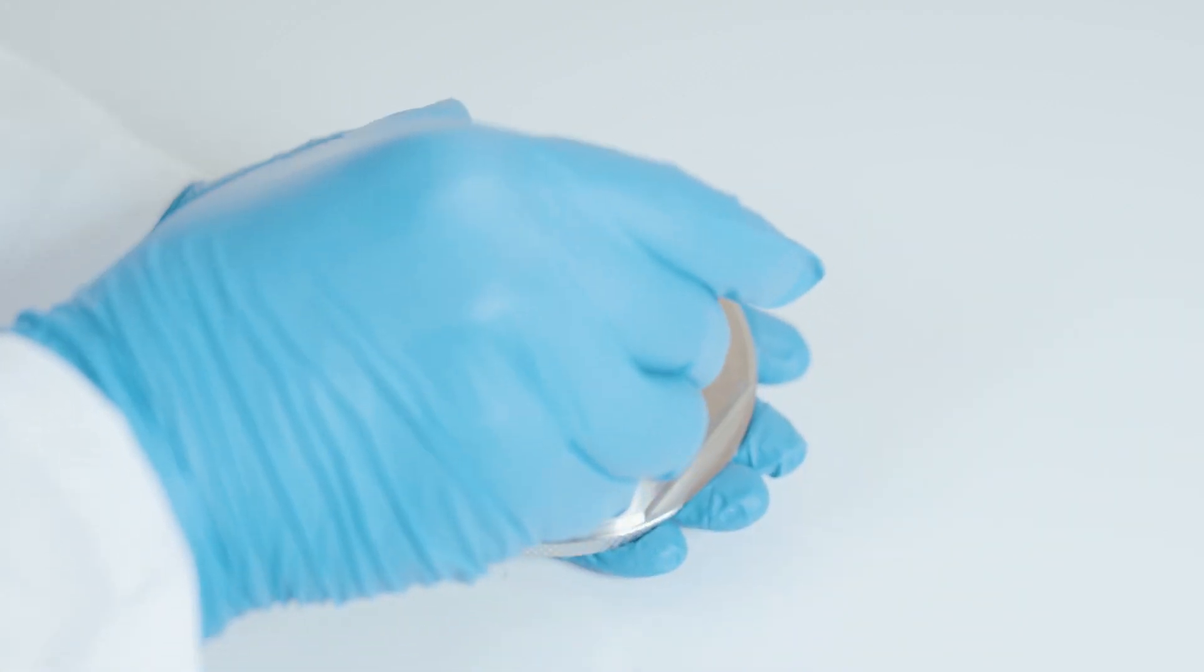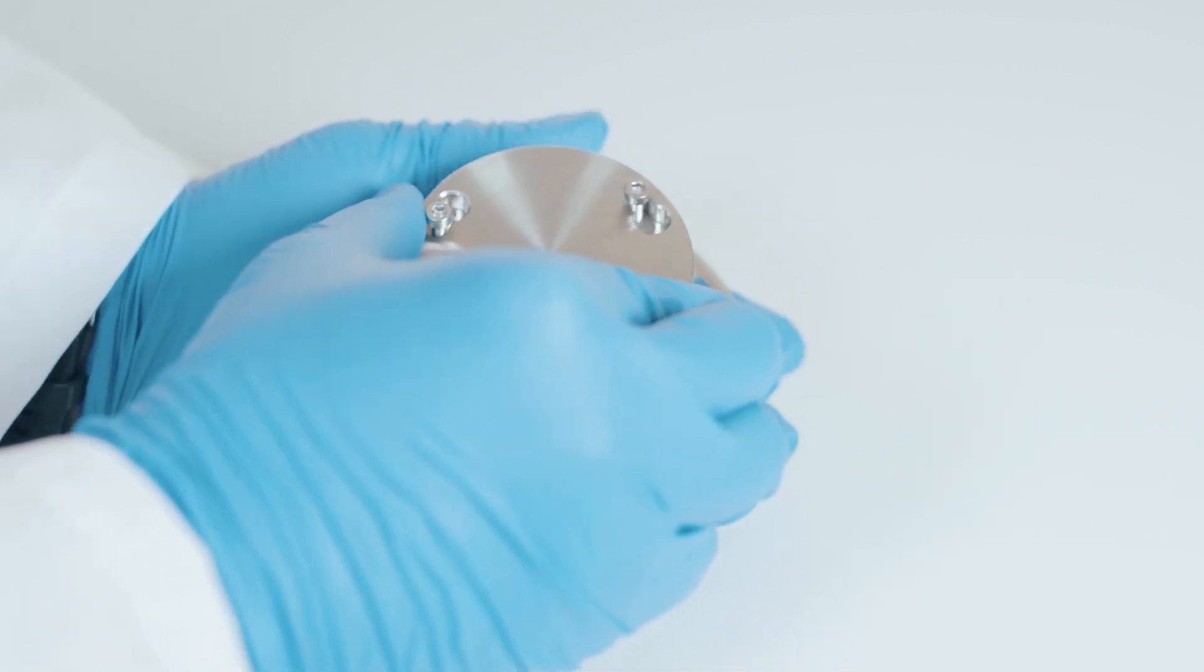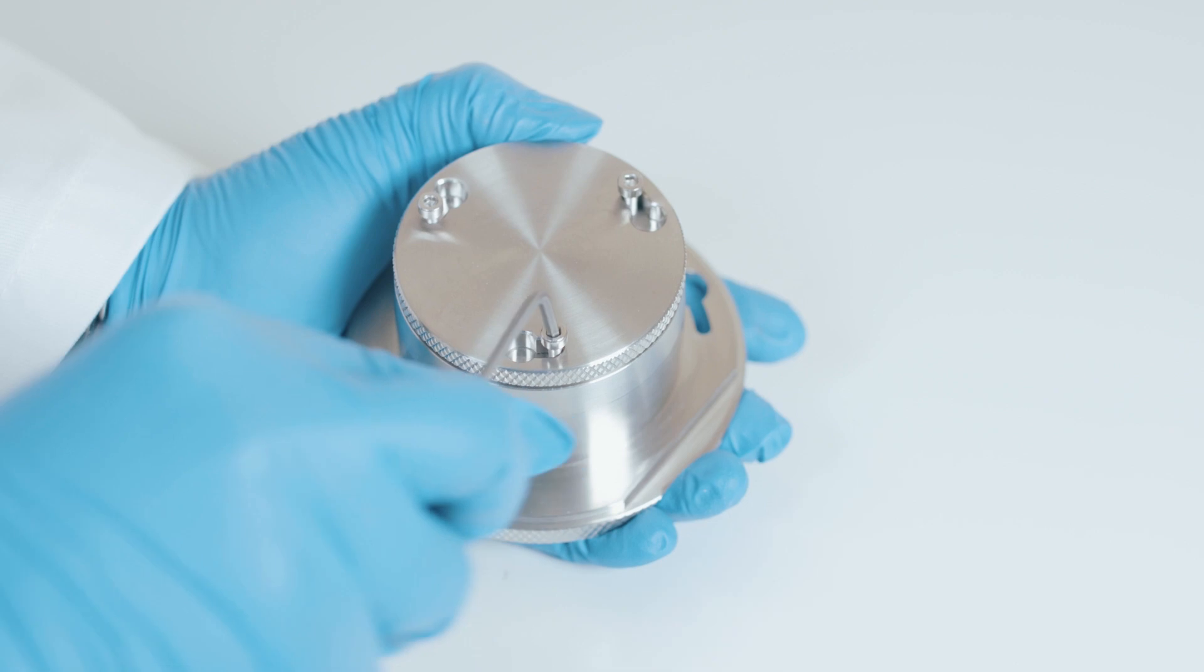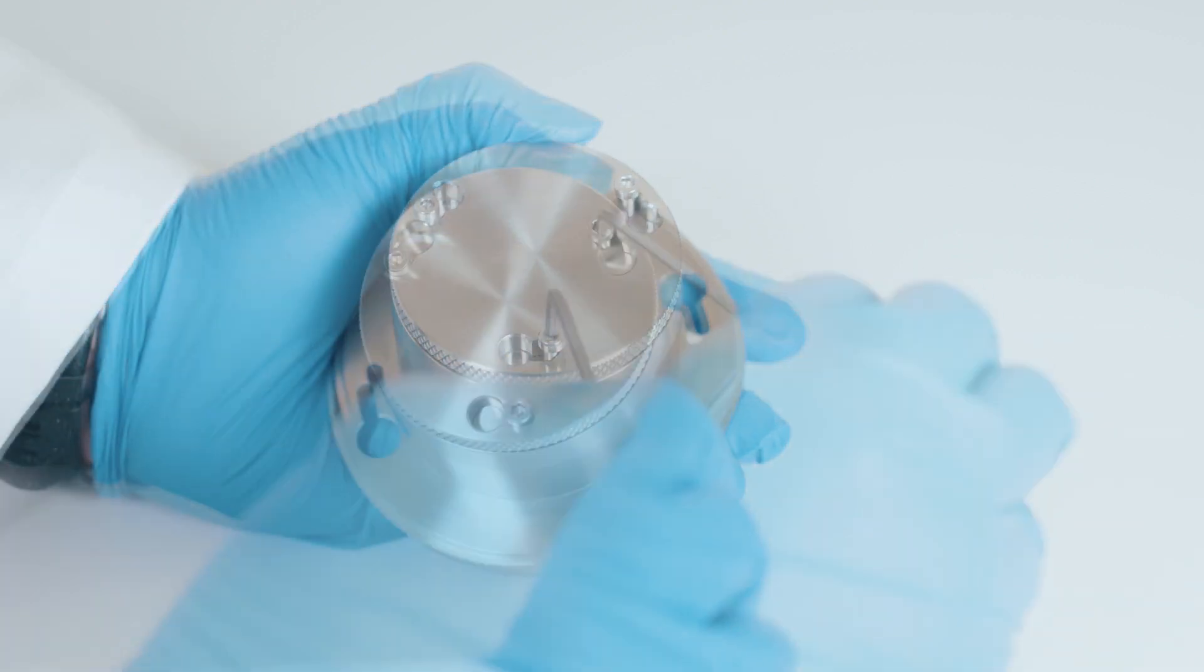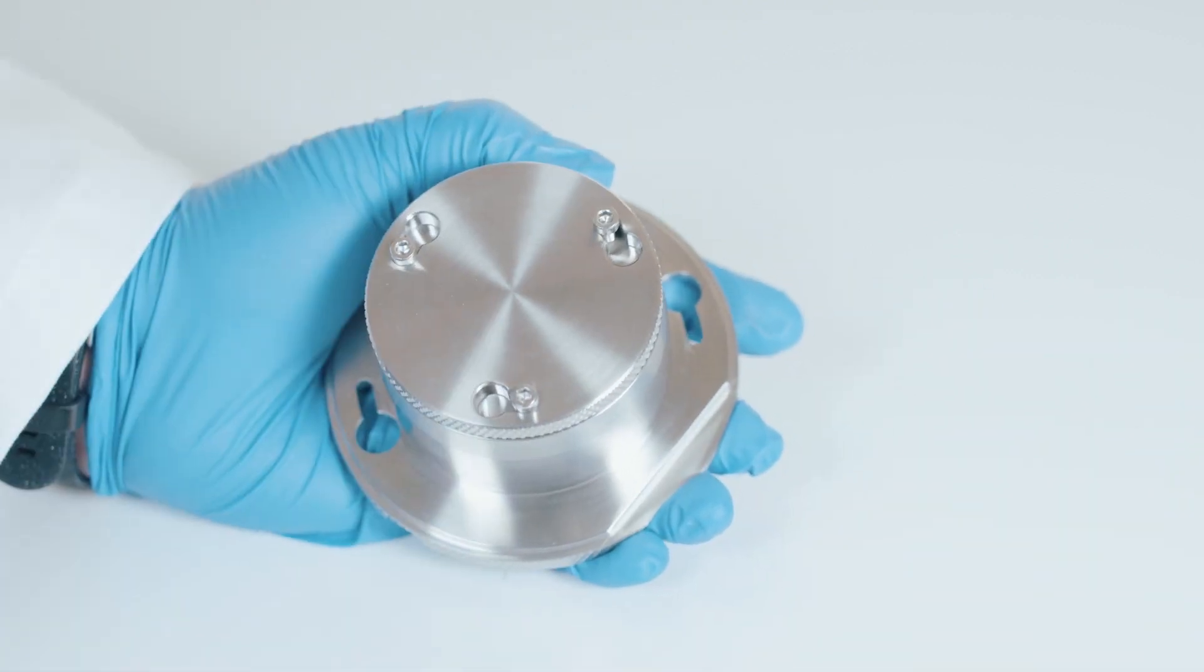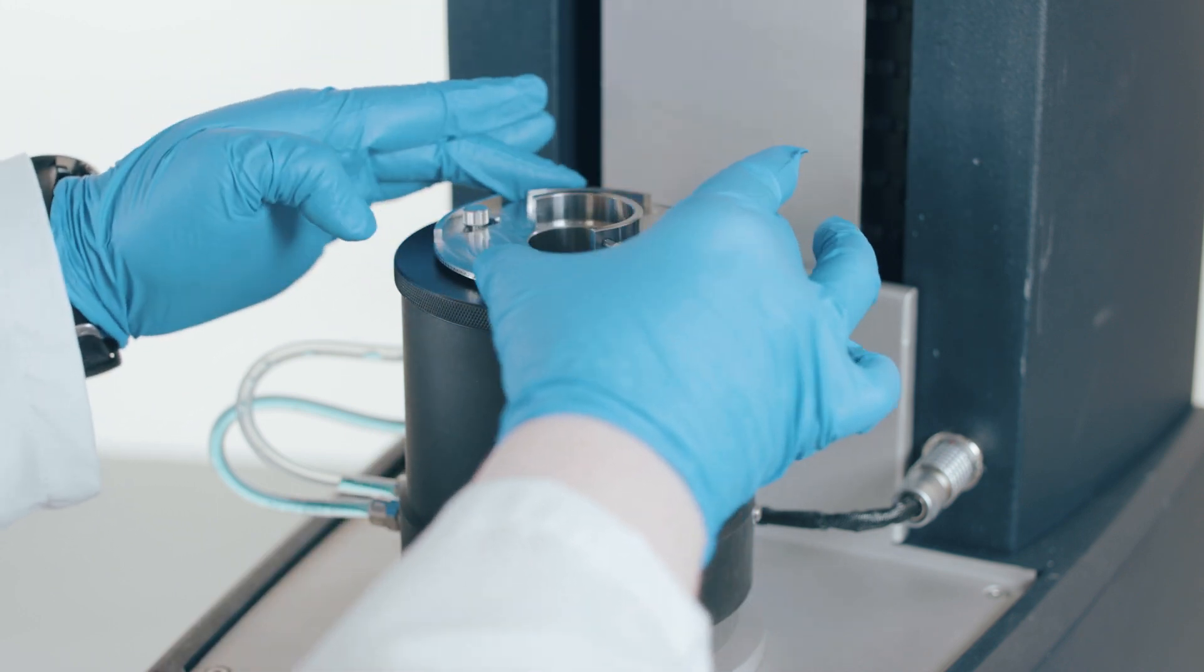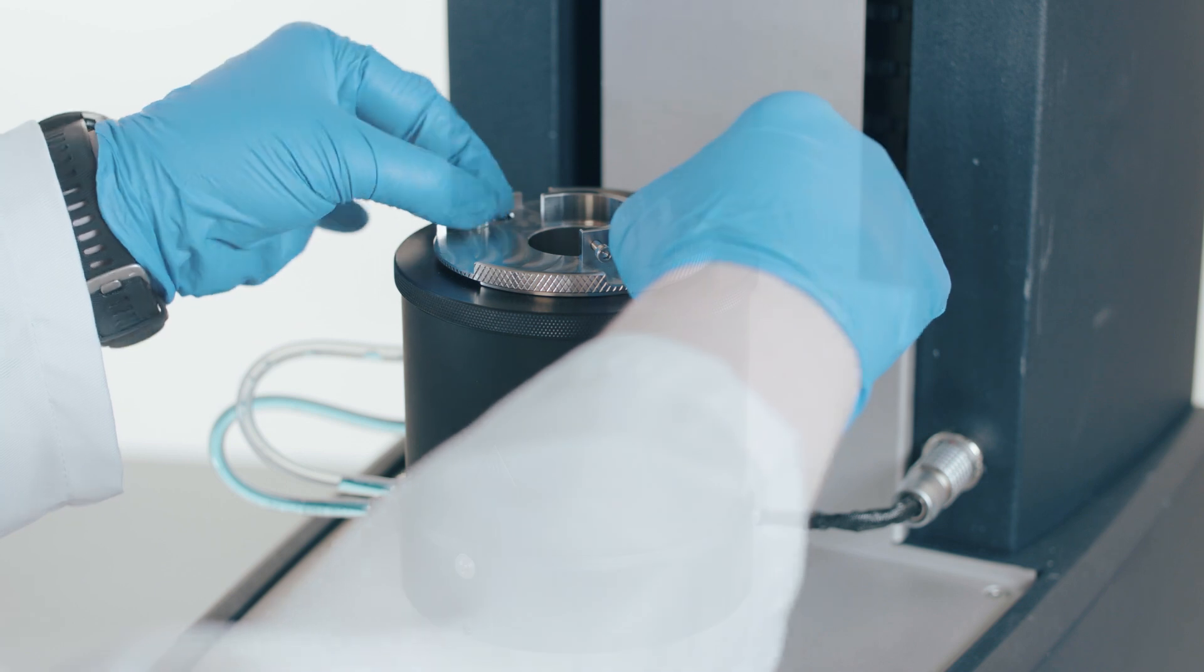The powder flow temperature cell is assembled by placing the flow insert straight down into the cup and securing the screws with the provided wrench. The cup is then placed into the Peltier concentric cylinder jacket, rotated into place, and secured with thumb screws.